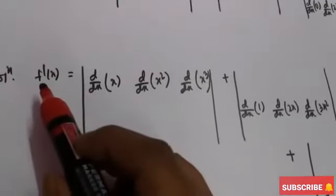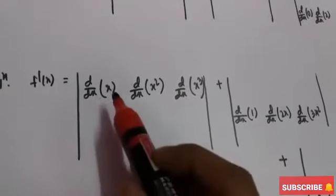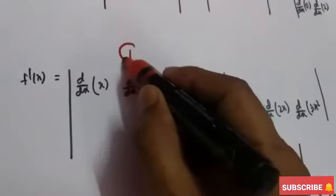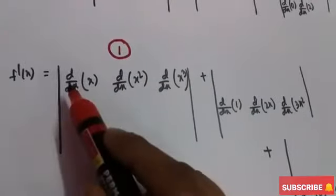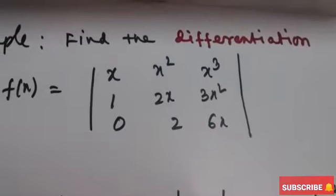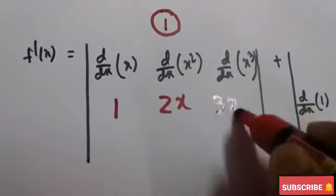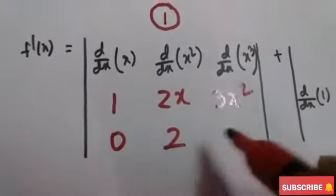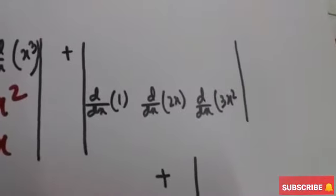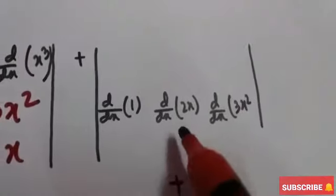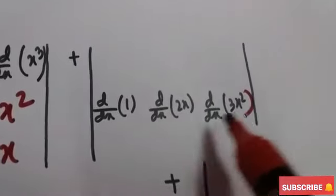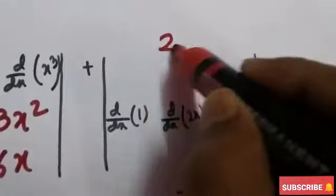Differentiating f'(x): first, differentiate the first row. The first row is x, x², x³, so we differentiate those and the rest two rows remain unchanged — that is 1, 2x, 3x² and 0, 2, 6x. For the second determinant, we take d/dx of 1, d/dx of 2x, and d/dx of 3x².